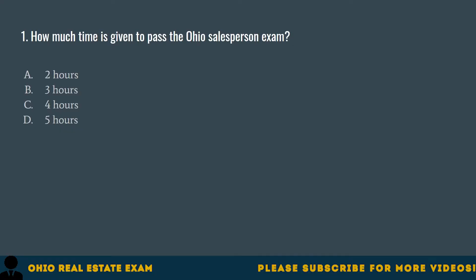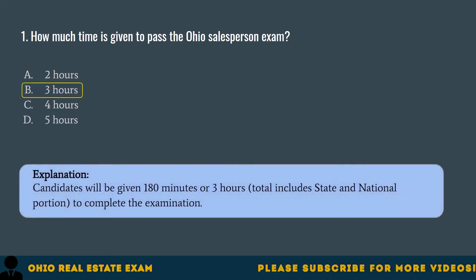Question 1. How much time is given to pass the Ohio Salesperson Exam? A. Two hours. B. Three hours. C. Four hours. D. Five hours. The correct answer is B. Three hours. Candidates will be given 180 minutes, or three hours total — including the state and national portion — to complete the examination.